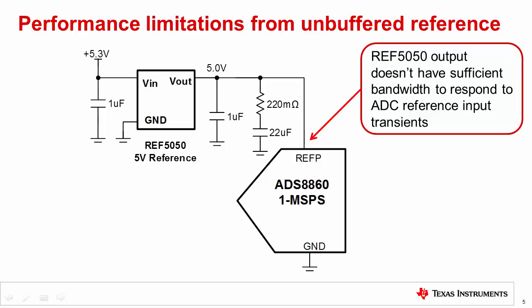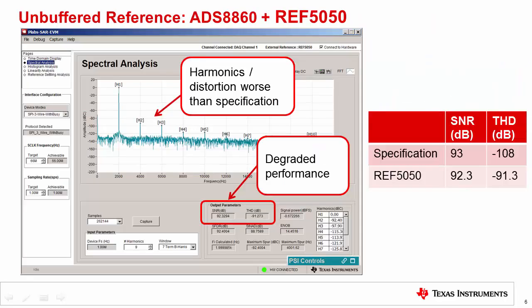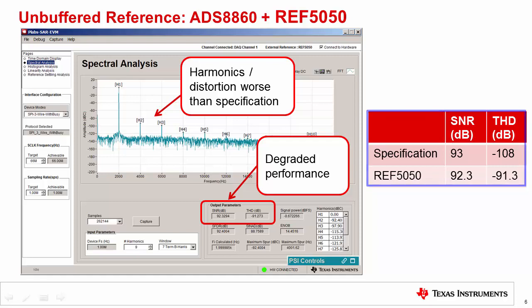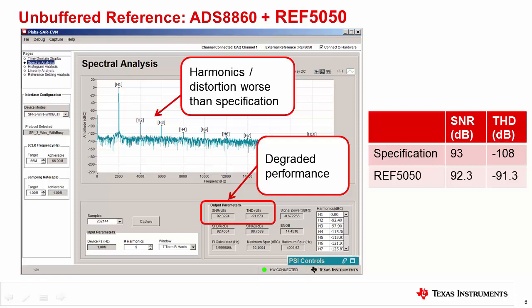Let's take a look at the measured results. This plot shows the FFT results of the ADS8860 sampling at 1-megasamples-per-second with the REF5050 reference driving the ADC without a buffer. Comparing the SNR and THD to specifications, you can see that the measured THD of negative 91.3 dB is significantly degraded compared to the expected THD of negative 108 dB. If you look at the FFT, you will notice a relatively large second and third harmonic. In the next slide, we will resolve this issue by placing a reference buffer with enough bandwidth and low output impedance to drive the reference input.